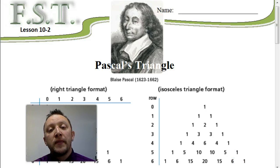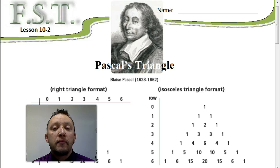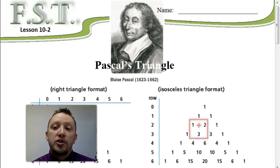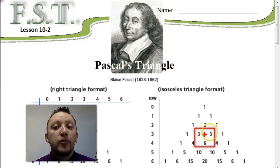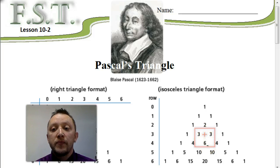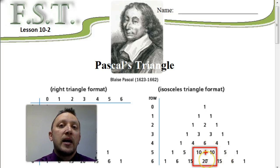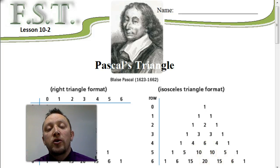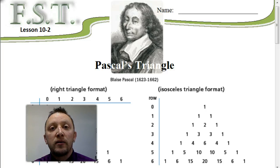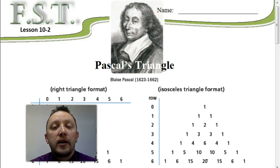Some other interesting patterns involve how to find the next row in the numbers. For example, 1 plus 2 is 3. And 3 plus 3 — if you look at those two numbers — the next row below it would be 6. Or here, 10 plus 5 is 15, and 10 plus 10 is 20. So to find the next row in Pascal's Triangle, you just add the two numbers that are directly above it.